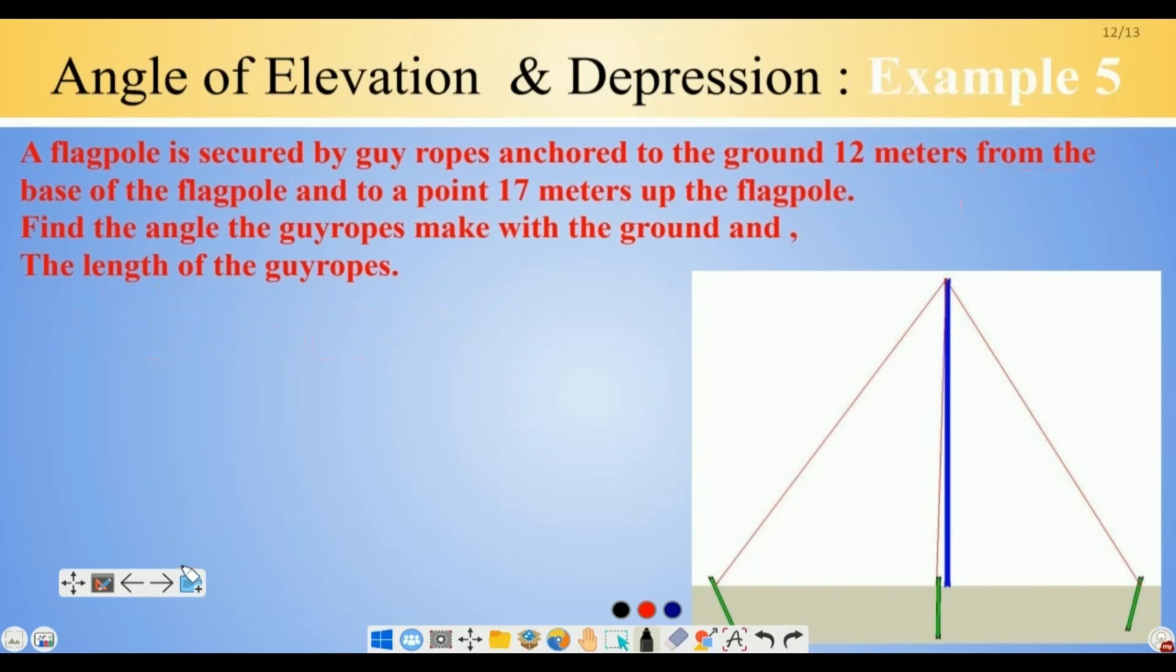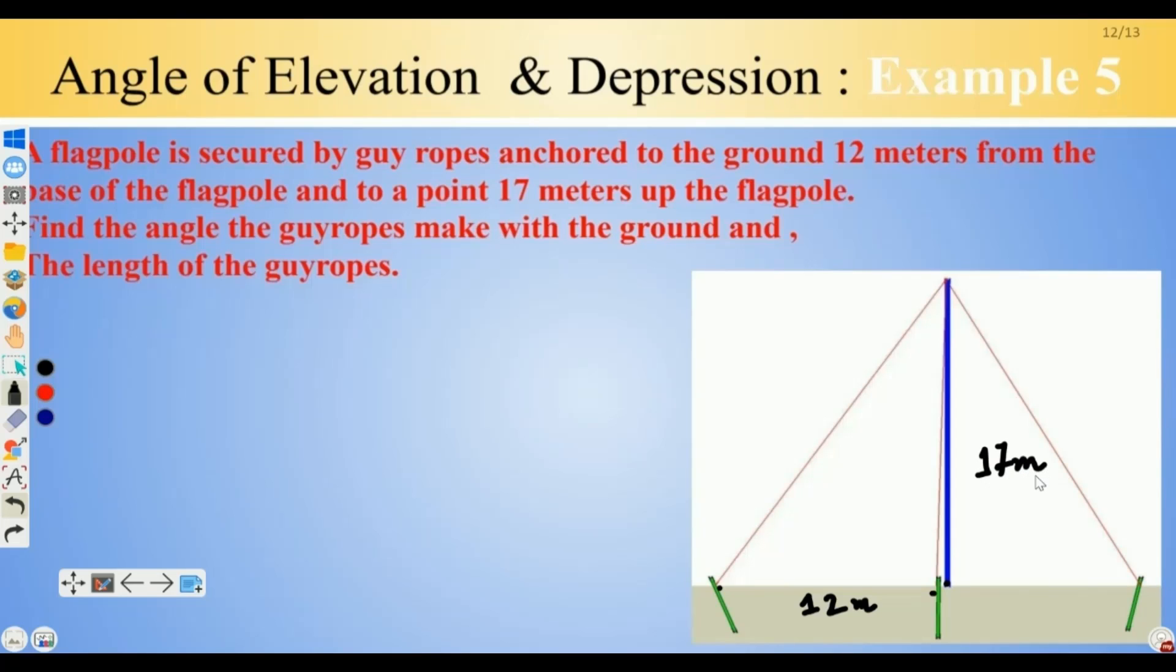The flagpole is secured by guy ropes anchored to the ground. It is 12 meters from the base of the flagpole. From here to here, the length is 12 meters. And from here to here, the flagpole itself or where these ropes join up, that length is 17 meters. Let's label this triangle as A, B, C. I have got a right angle triangle and I know two of the sides. I know AB equals 17 meters and BC equals 12 meters.